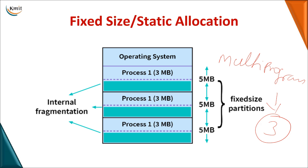The main problem with fixed-size allocation is internal fragmentation. For example, if a block is 5 MB but the process is only 3 MB, the remaining 2 MB is wasted and cannot be used by another process. You cannot store two different processes in a single block, so the unused space within a block is wasted.